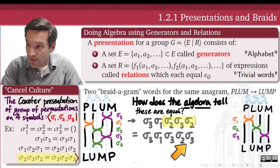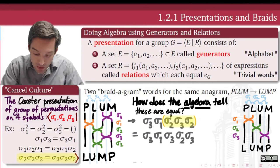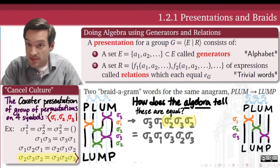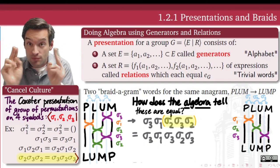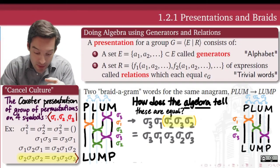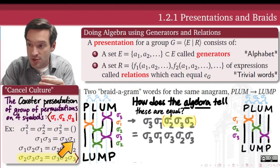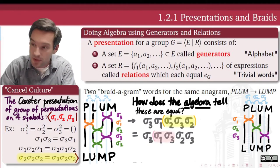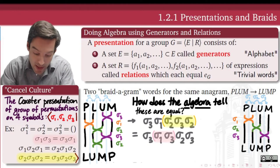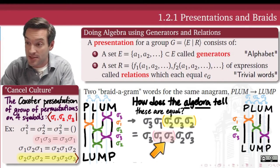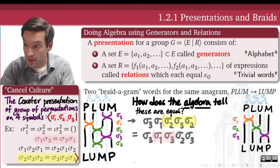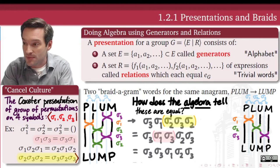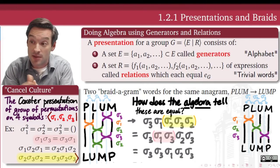After that substitution, we now have sigma three and sigma one next to each other. These are disjoint transpositions, so by the commutation relation, sigma one, sigma three equals sigma three, sigma one. Using associativity, we group those two together and make that replacement — swapping sigma one, sigma three for sigma three, sigma one.